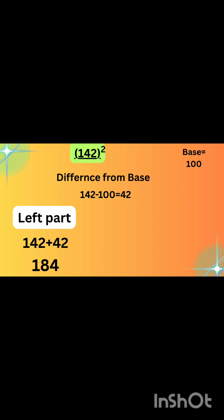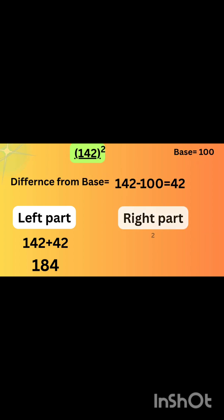Now solve the right side of our sum. After difference from base number we get 42. For the right side of our answer, we will take the square of 42, which is 1764.